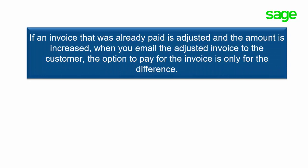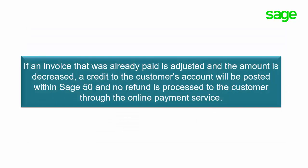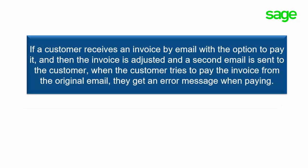If an invoice that was already paid is adjusted and the amount is increased, when you email the adjusted invoice to the customer, the option to pay is only for the difference. For example, if the original invoice amount was $1,000 and you adjusted it to $1,500 after it was paid online, when you resend it to the customer, the customer will see the option to pay $500. If an invoice that was already paid is adjusted and the amount is decreased, a credit to the customer's account will be posted within Sage 50, and no refund is processed to the customer through the online payment service. Also, if a customer receives an invoice by email with the option to pay it, and then the invoice is adjusted and a second email is sent to the customer, when the customer tries to pay the invoice from the original email, they get an error message.